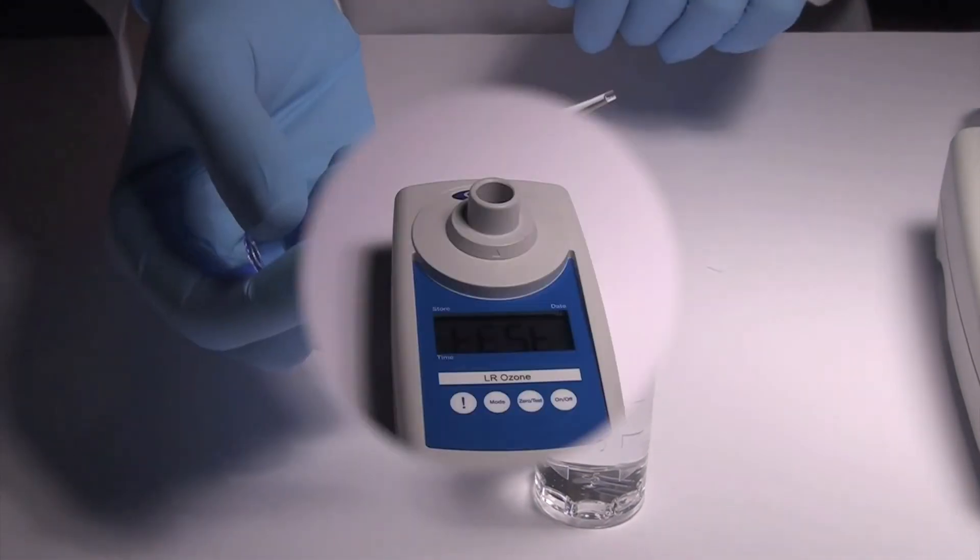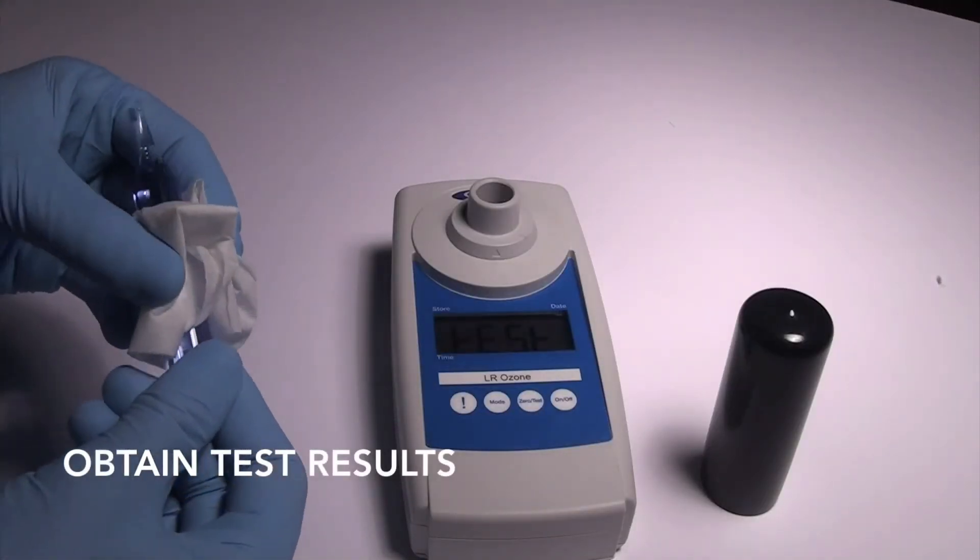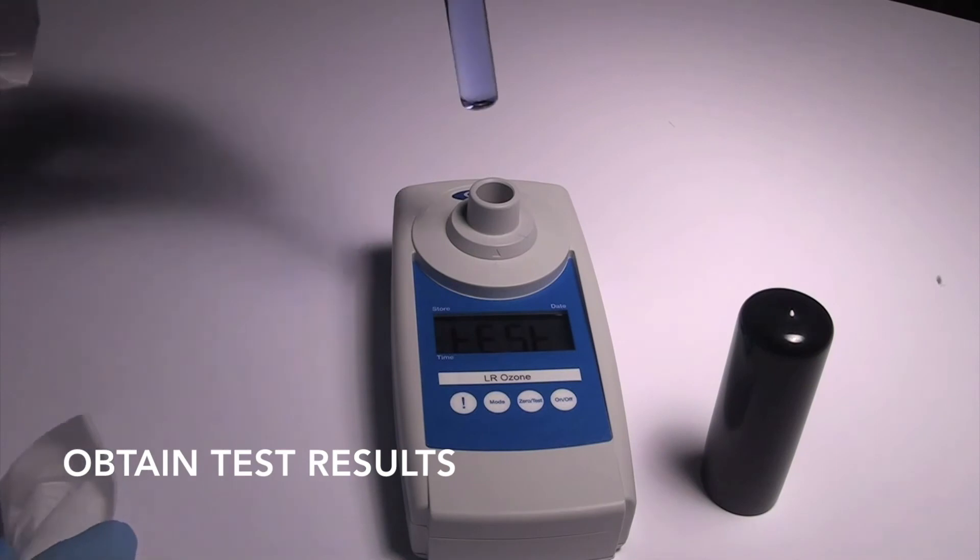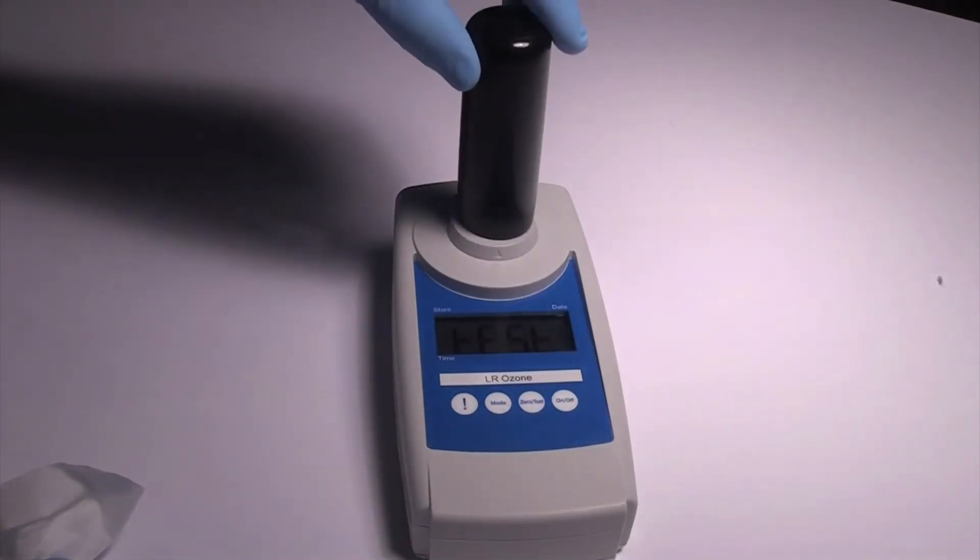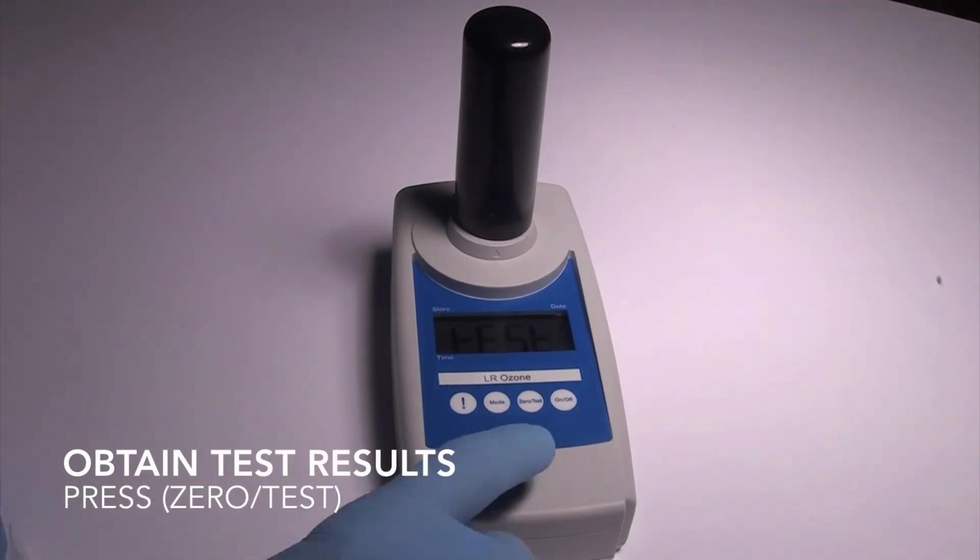Dry the ampoule and insert it into the photometer, flat end first. Place the light shield over the ampoule and press zero test. The SAM photometer will display a test result in parts per million ozone.